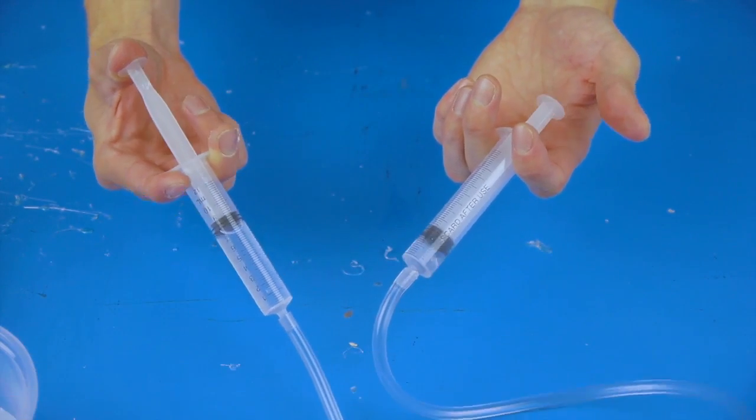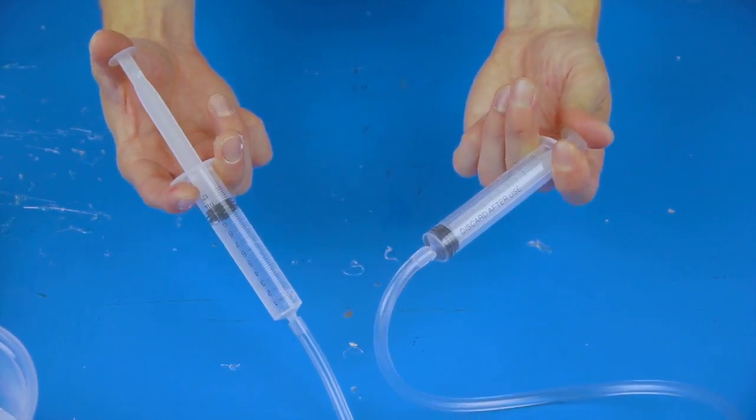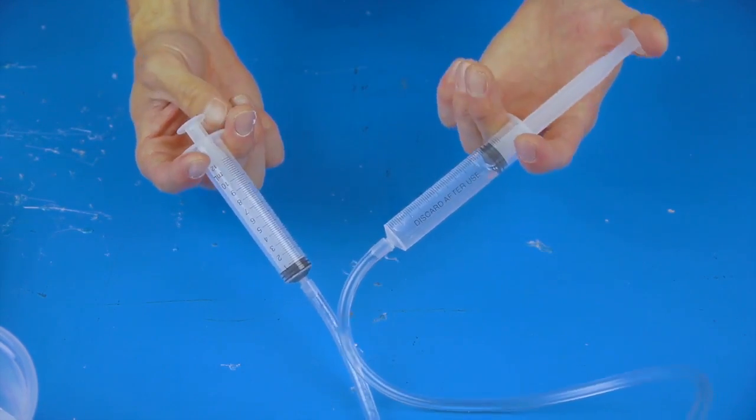If you have air in the system, your pushes and pulls on the control will expand and contract the air instead of pushing and pulling on the water.